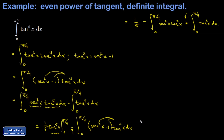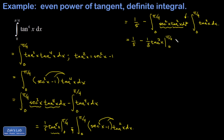In the first integral I have this situation again where I have the derivative of tangent sitting right next to a power of the tangent function. I'll pop my differential back in there and this integrates to one-third tangent cubed, evaluated from 0 to π/4.